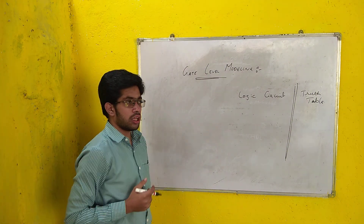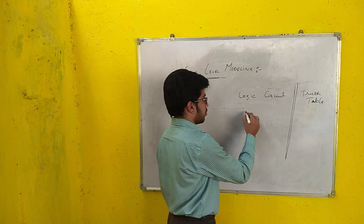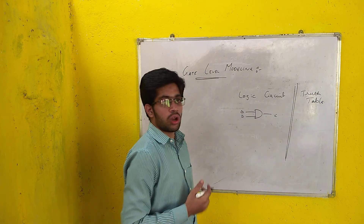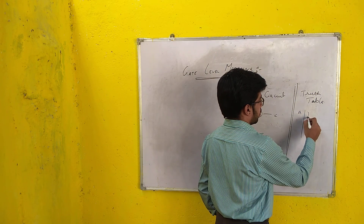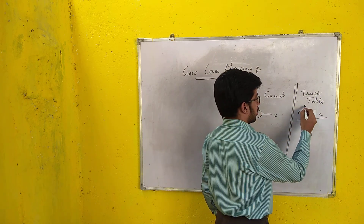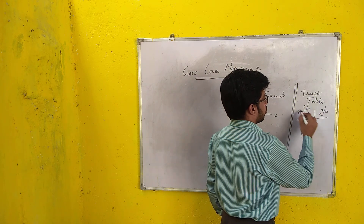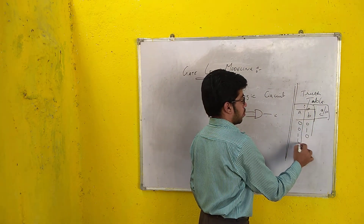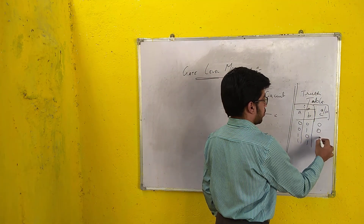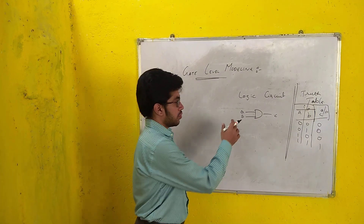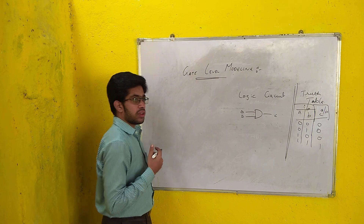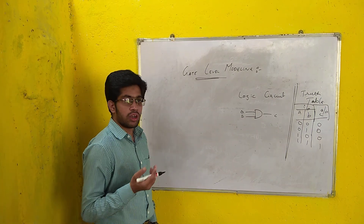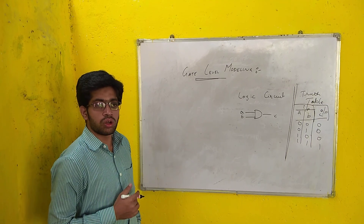We will learn Gate Level Modeling by considering a simple example of an AND gate — two inputs A and B, and output C. We also need a knowledge of its truth table: inputs A and B, and output C. The output is 0 for combinations 0,0 and 0,1 and 1,0, and the output is 1 only when both inputs are 1.